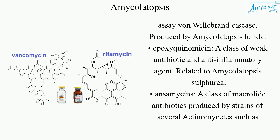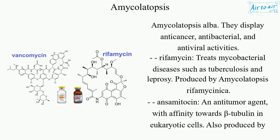Ansamycins are a class of macrolide antibiotics produced by strains of several actinomycetes, such as Amycolatopsis alba. They display anti-cancer, antibacterial, and antiviral activities.